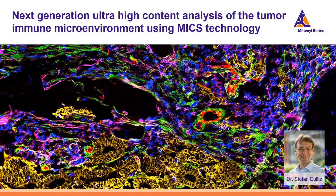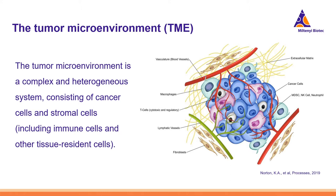The solid tumor is embedded in the surrounding structures of its location. The complex system of different cell types, the extracellular matrix, molecules such as chemokines, cytokines, microRNAs and other factors, as well as vessels define the specific tumor microenvironment.